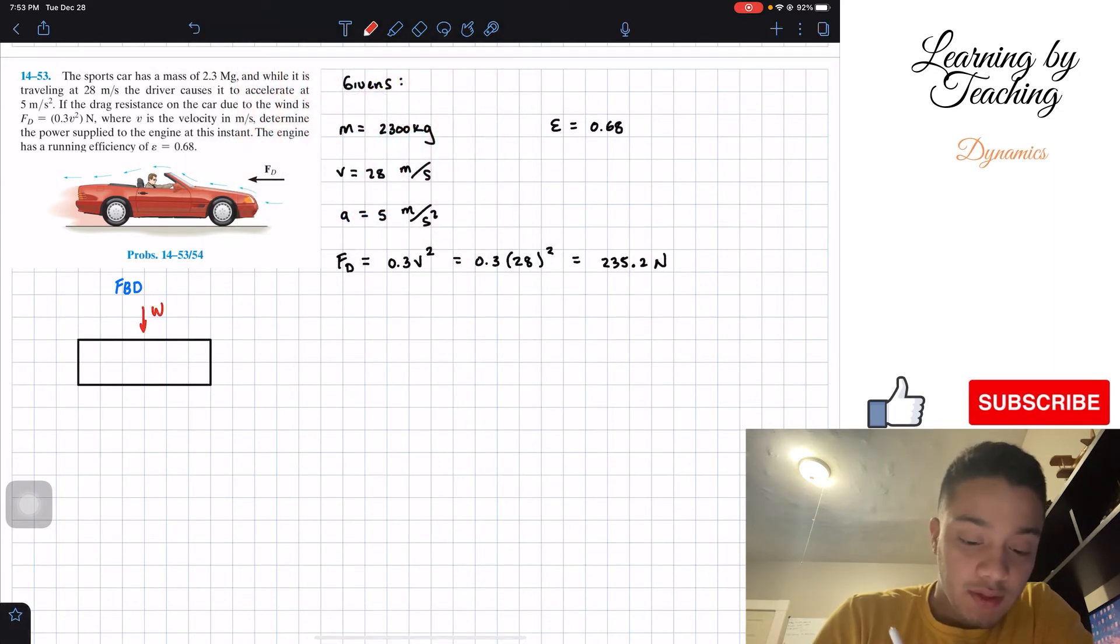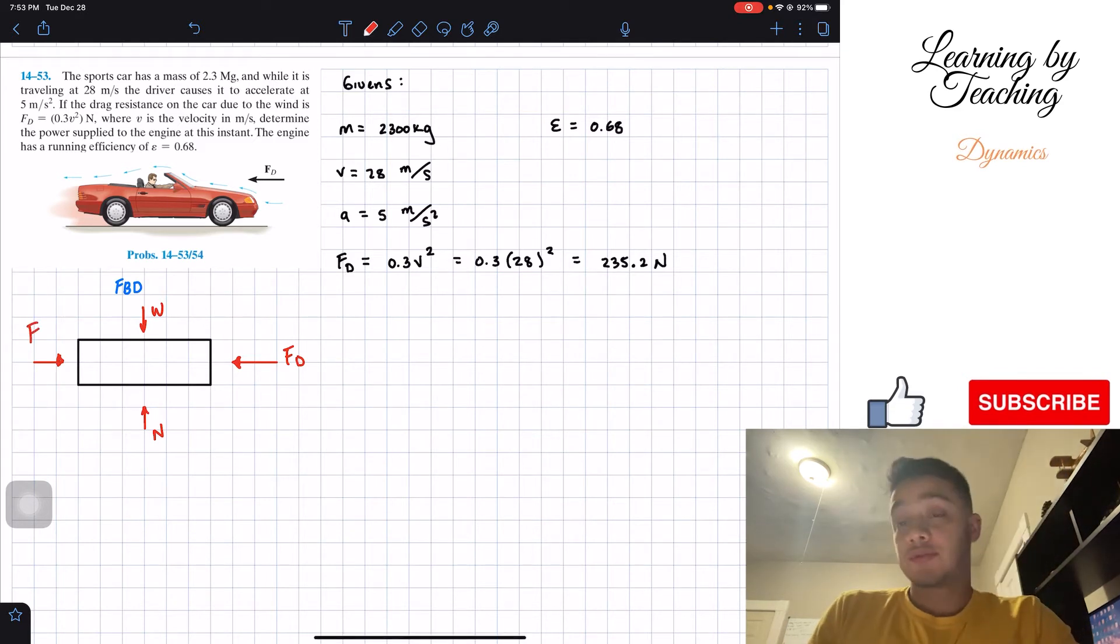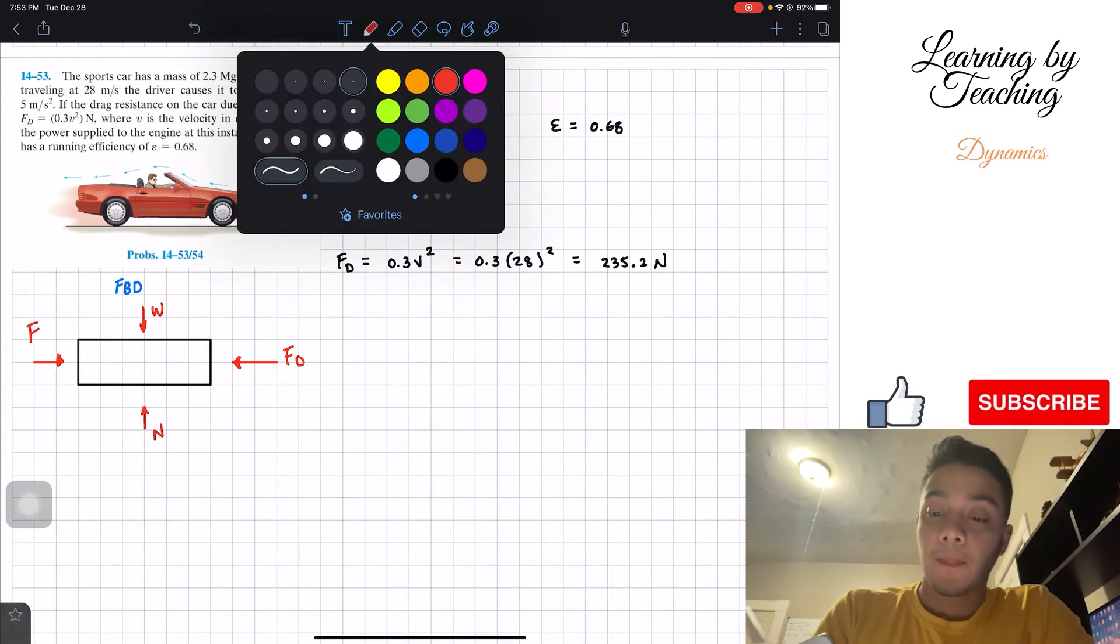What forces do we have? Going down we have the weight. We have a force going up, that is the normal force. Going to the left, as shown in the figure, we have the dragging force. And of course, the force at which we're driving this sport car, we're just going to name it F.